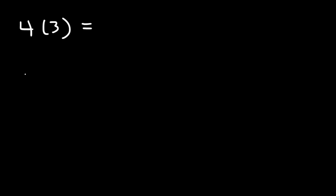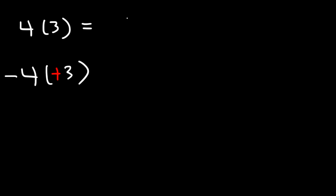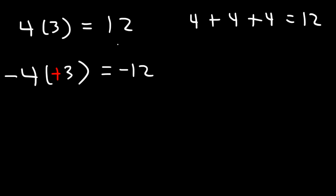Now let's talk about multiplication of integers — positive and negative. What is 4 times 3? You know that 4 times 3 is 12. What about negative 4 times 3? A negative number times a positive number gives a negative result — negative 4 times 3 is negative 12. We can see why: if you add 4 three times you get 12, and if you add negative 4 three times you get negative 12.